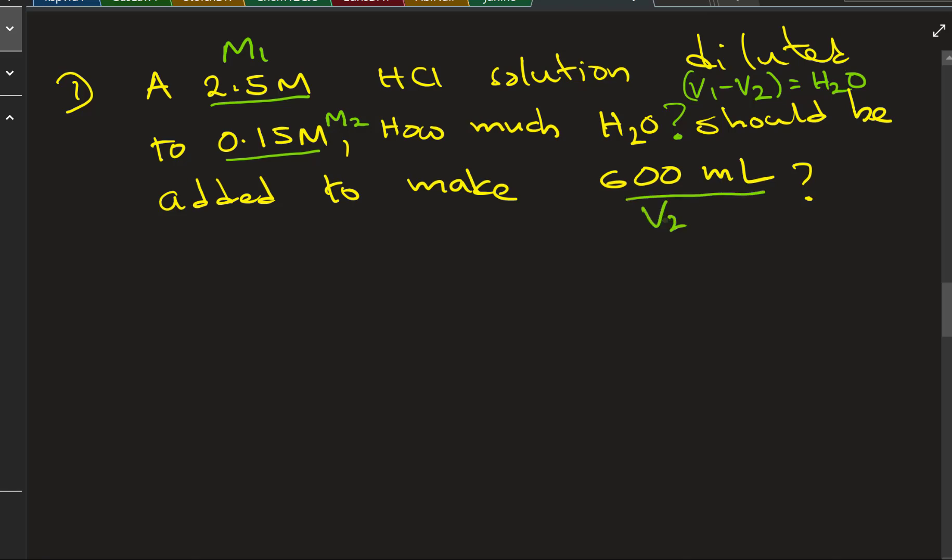So V2 is 600 milliliters. These are the givens, so sort them out and label them. We are looking for V1, that's the question.